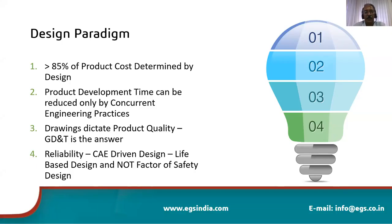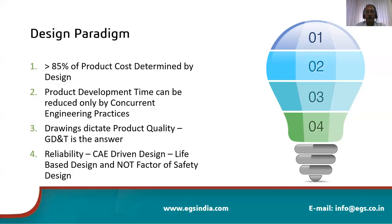The cross-functional team must meet goals in terms of cost, time, quality, and reliability. Drawings dictate product quality; the fate of the product is determined by design. GD&T is the mainstay for developing those drawings. We can no longer simply develop to a print given by someone else — we need to be product development experts to improve the value chain. Life-based design is important rather than factor-of-safety design alone.